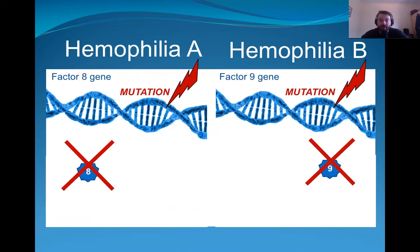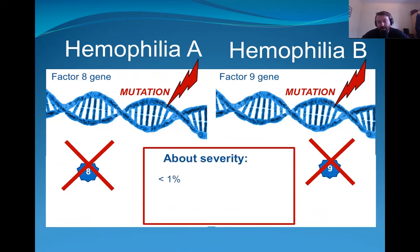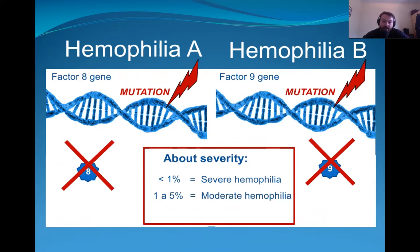Now about severity. Severity is in relation to the activity of the factor protein produced by the factor gene, either factor 8 or factor 9. A person with severe hemophilia has under 1% of activity. Somebody with moderate hemophilia has between 1 and 5% of activity. A person with mild hemophilia has between 5 and 40% of activity.